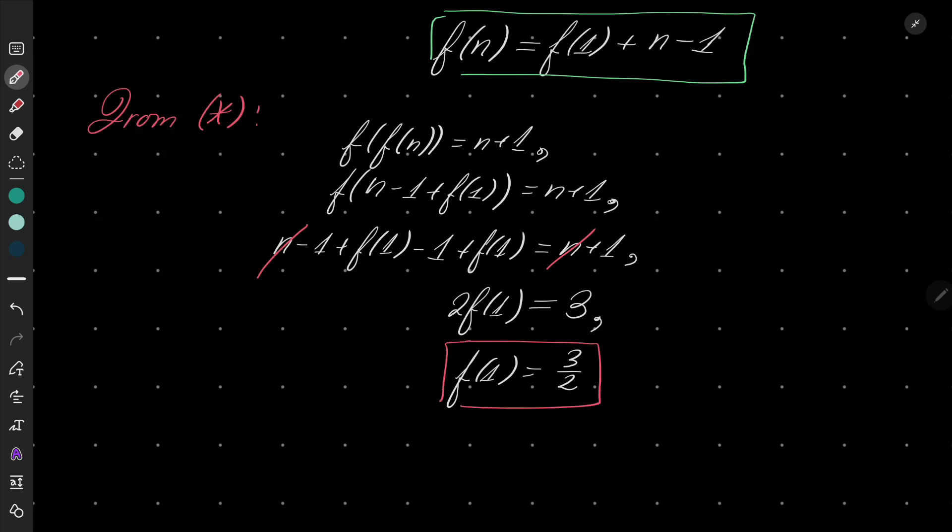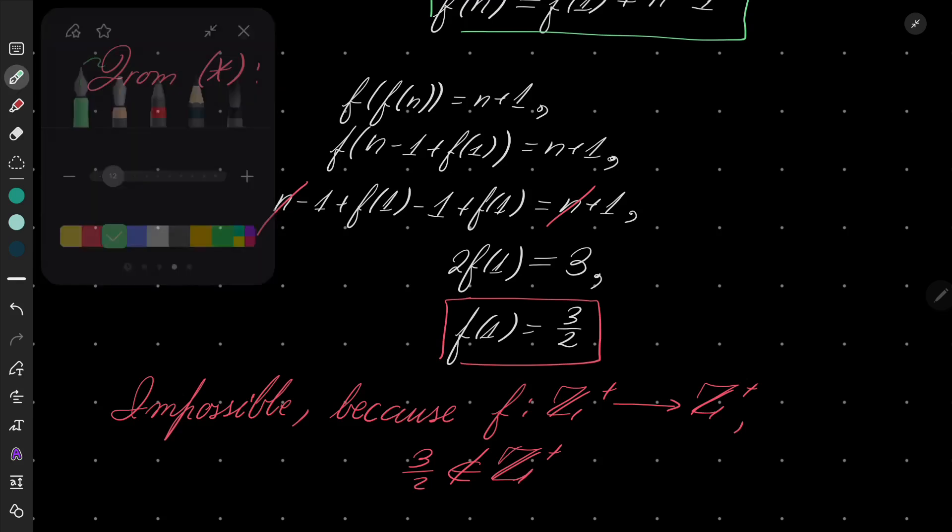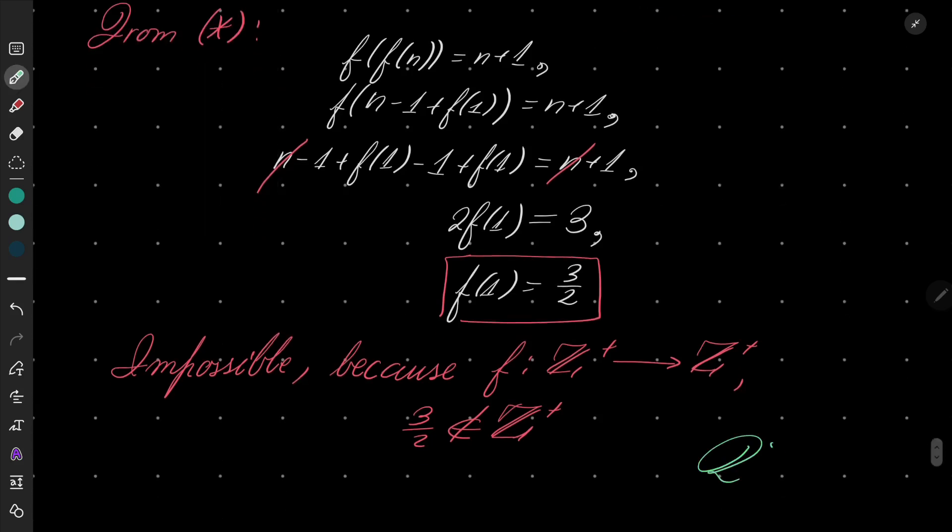This is impossible, because recall that f should go from positive integers into itself, and 3 over 2 is not a positive integer. This justifies that our functional equation has no solutions. That closes our proof. Thank you for watching and see you soon.